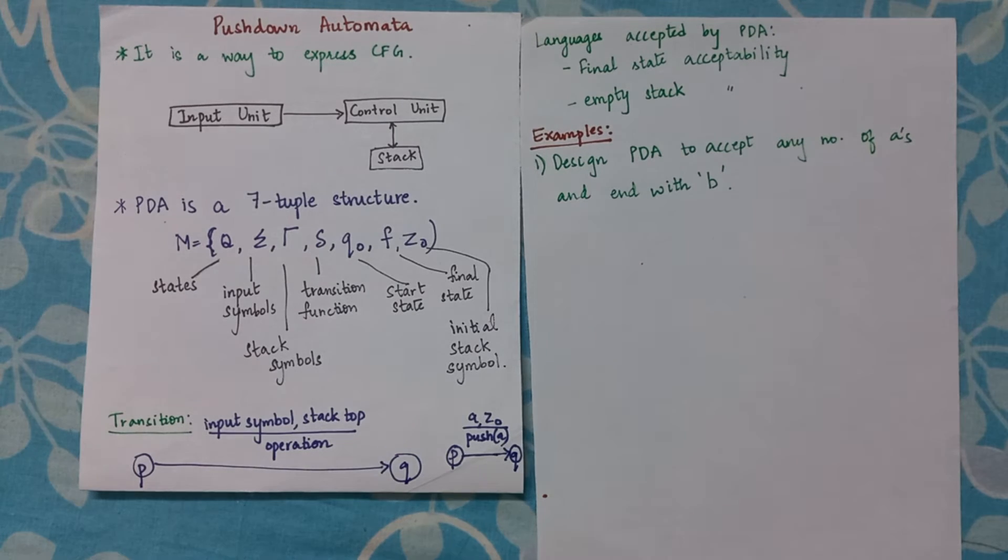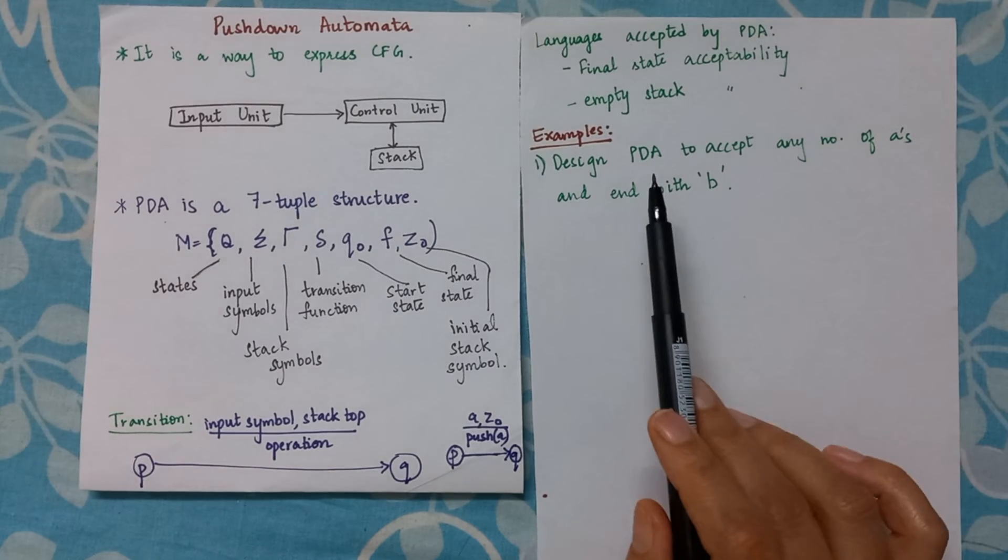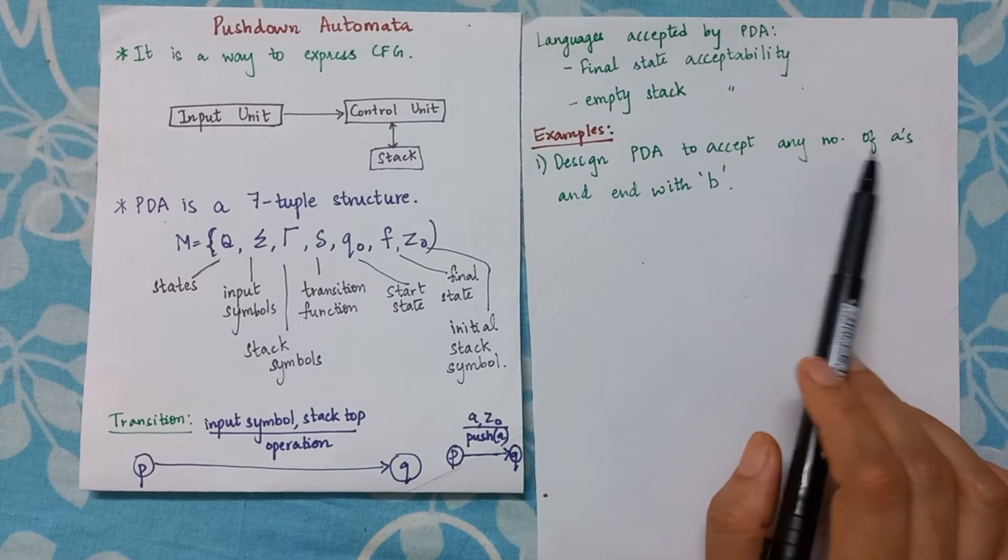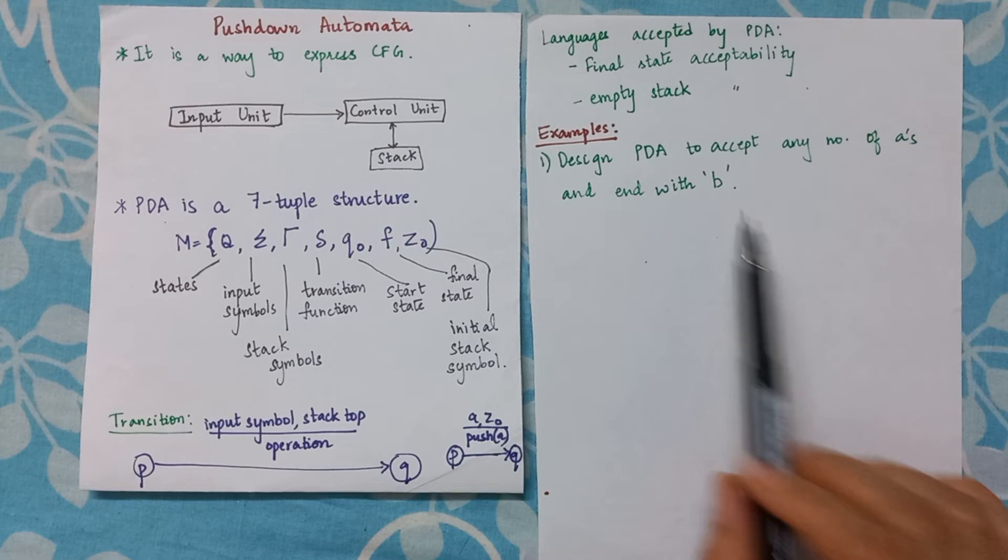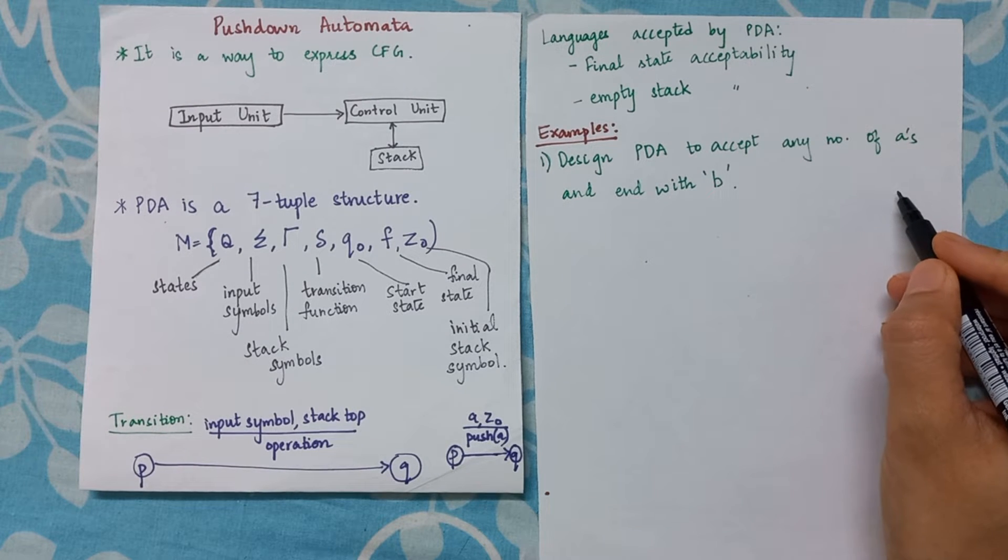Okay, now let us consider a simple example. Design a PDA to accept any number of a's and end with 'b'. So I can have initially any number of a's.